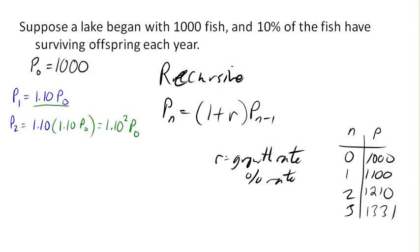So now same idea. P3 is 1.10 times P2. But I know something about P2. I know that P2 is 1.10 squared times P0. Right? That was P2 is 1.10 squared times P0. And now 1.10 times 1.10 squared is 1.10 cubed times P0.